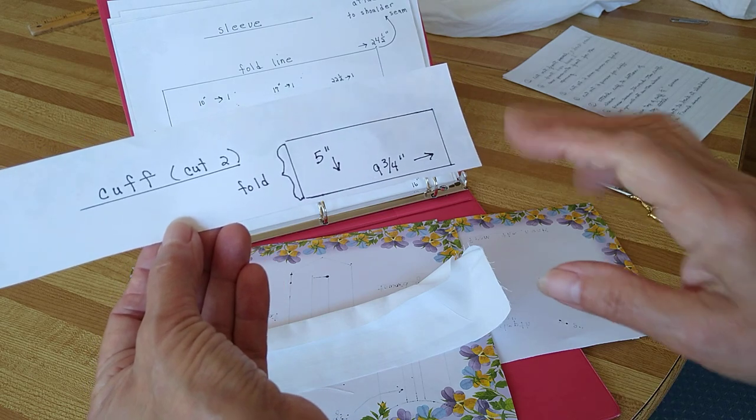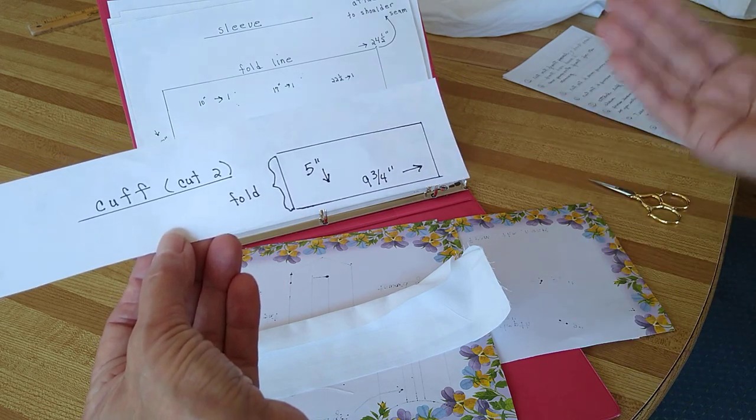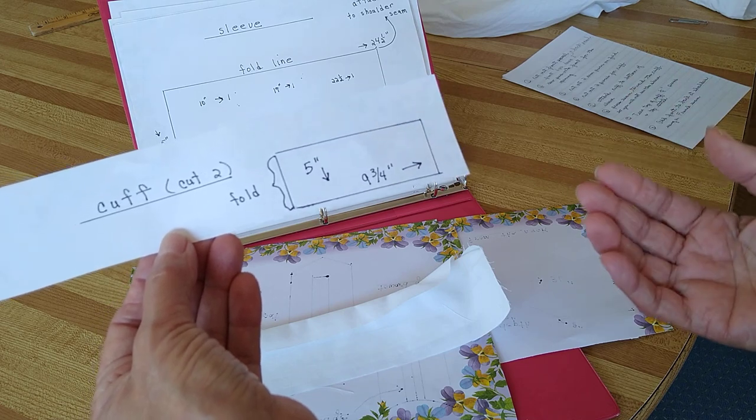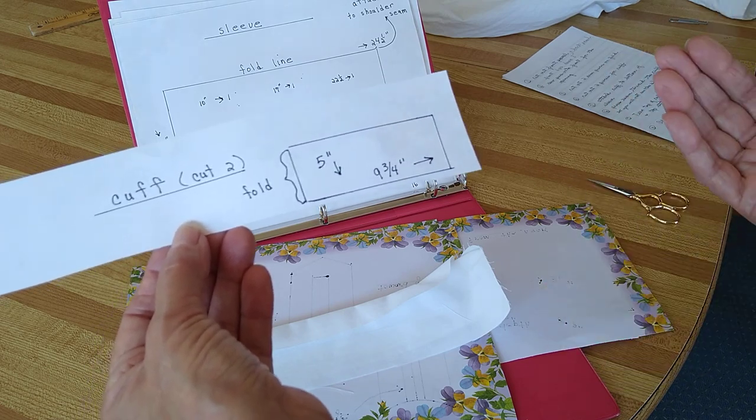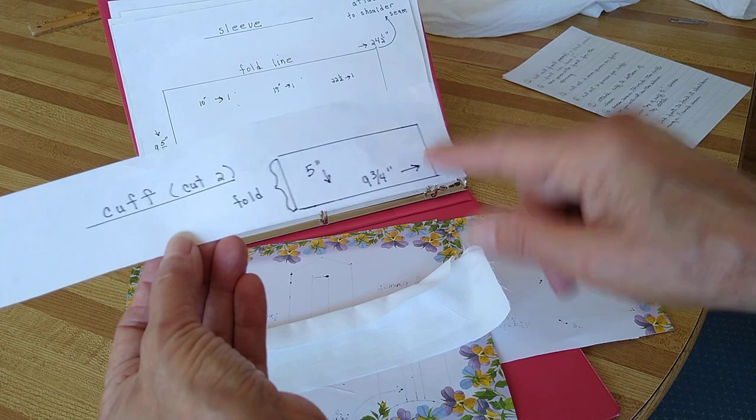You cut out these cuffs and make them. Sometimes over the years the cuff really gets worn but the rest of the garment is not, so you could always replace this piece.